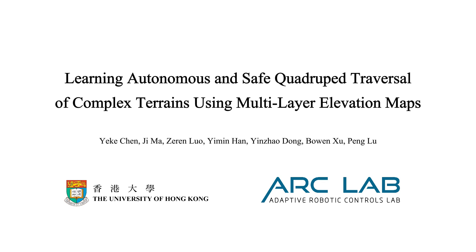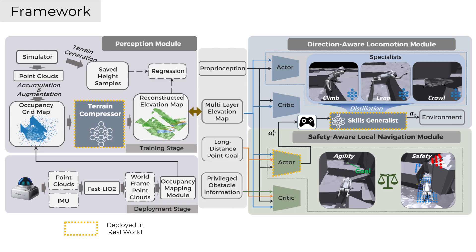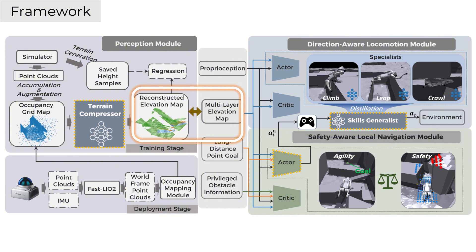This video introduces our work: learning autonomous and safe quadruped traversal of complex terrains using multi-layer elevation maps. We present a hierarchical control framework for quadrupedal robots that enables safe and autonomous traversal of cluttered terrains. At its core is a novel multi-layer elevation map representation designed to generalize across diverse terrains.